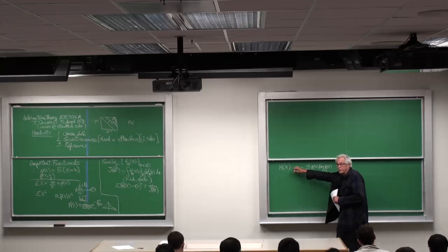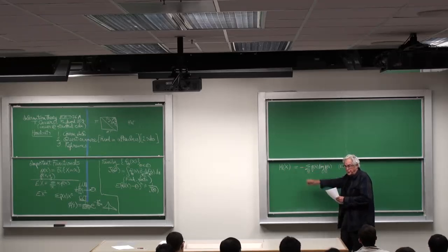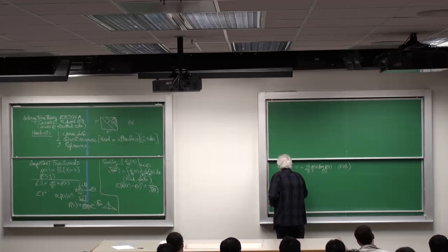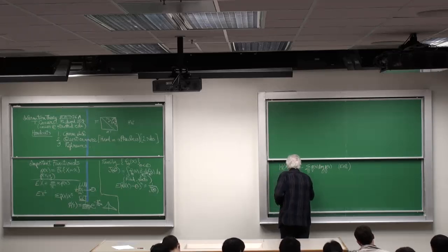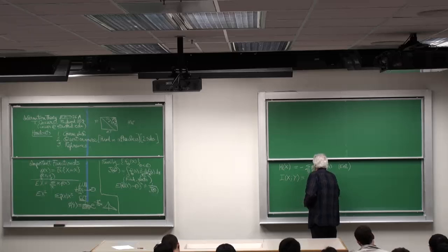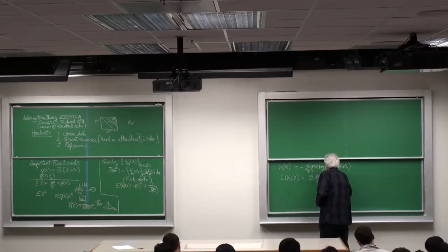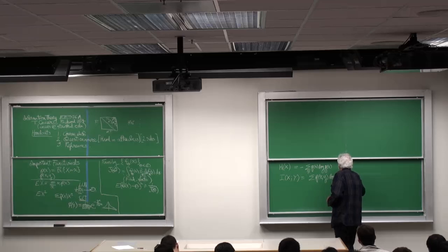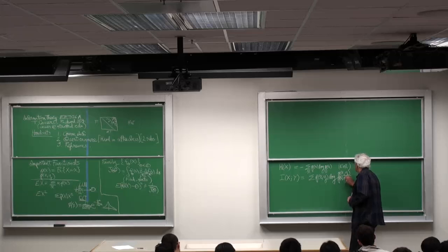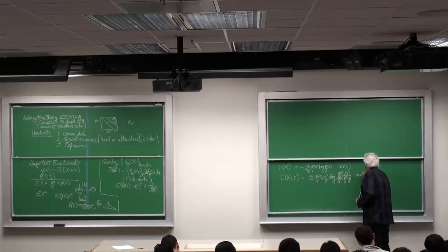Now, I'll be giving a number of statements where this will be the answer, so let's put that off. We'll have i of x, y equals summation p of x, y log of the joint distribution over the product of the marginals.